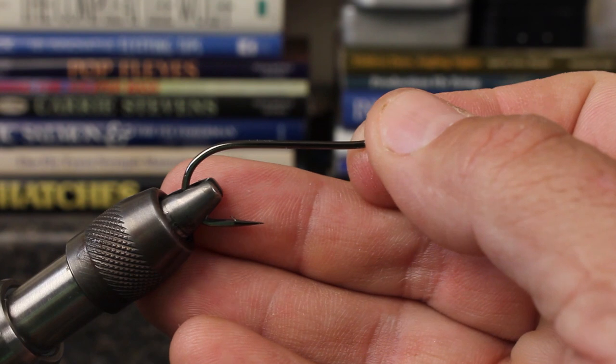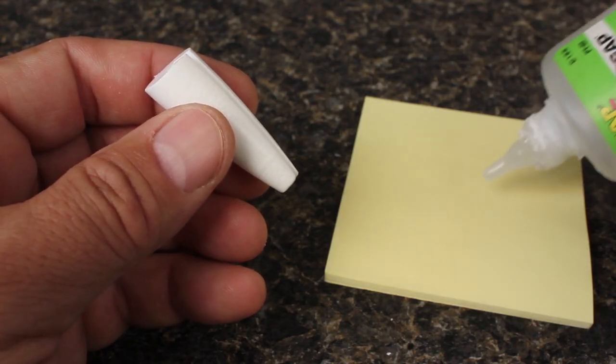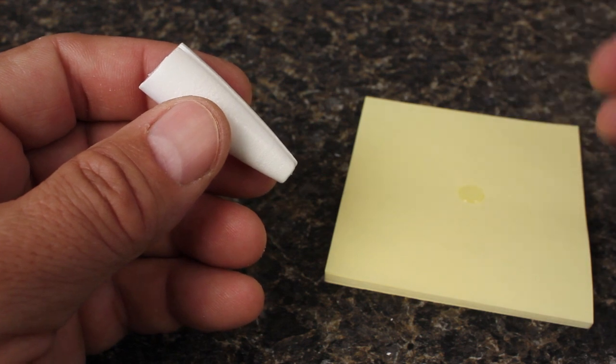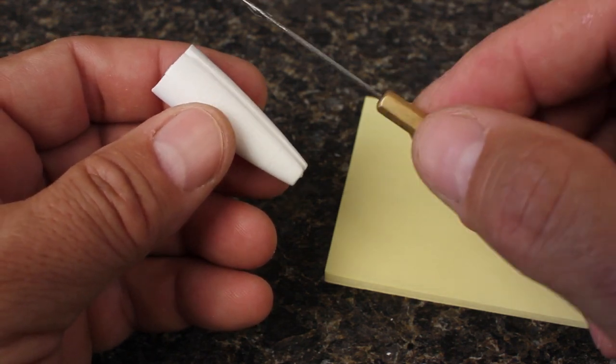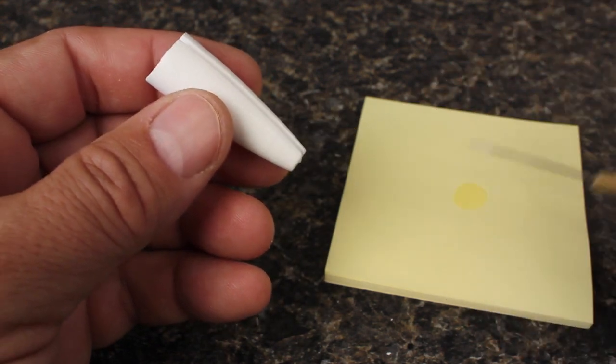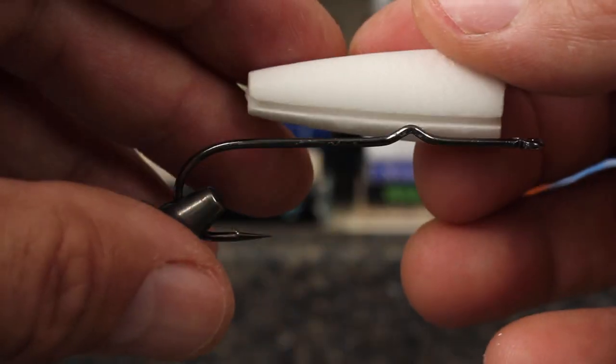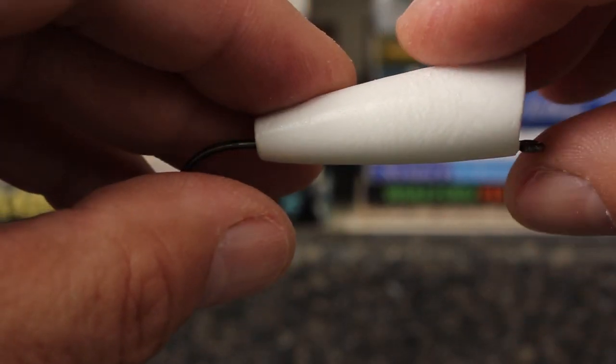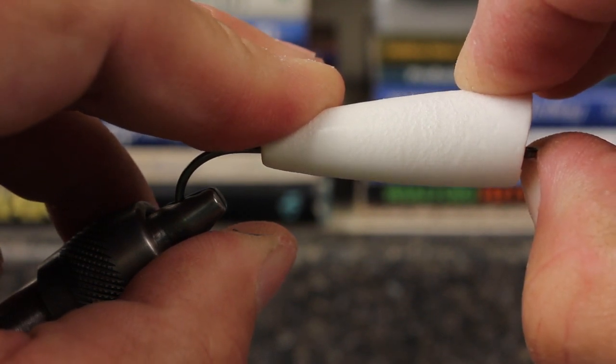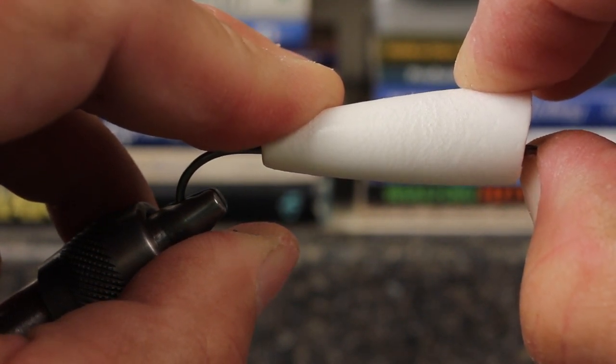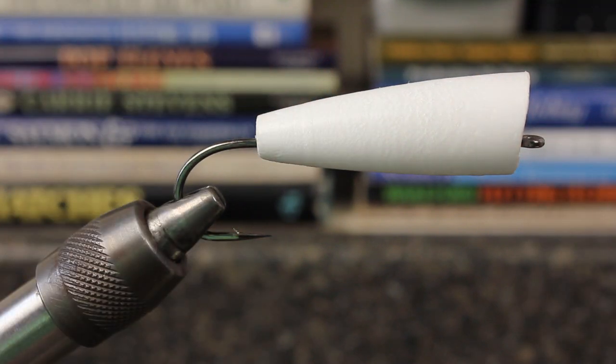You're next going to apply zap-a-gap to the inside of the channel and then secure the popper body to the top of the hook. Hold it tight for a few seconds while the glue sets. What you're doing is basically spot welding the popper body to the hook. More permanent adhesion is needed and will come later.